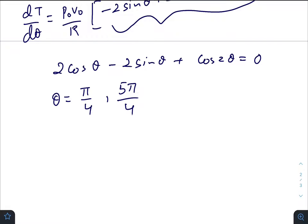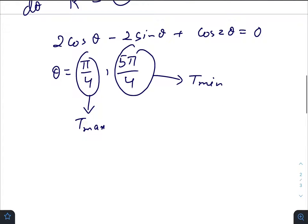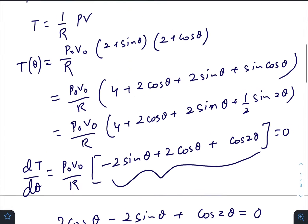For this one we will get T_max, or for this one we will get T_min. So T_max is nothing but, use this relation: